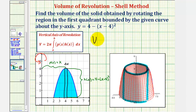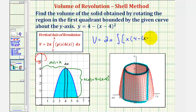The volume is equal to two pi times the integral of p of x, which is x, times h of x, which is the function value four minus the quantity x minus four squared, integrated with respect to x from two to six, which are the x-intercepts of our function.